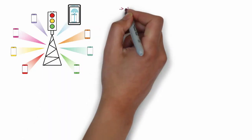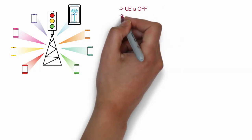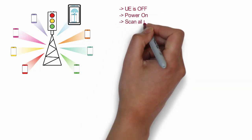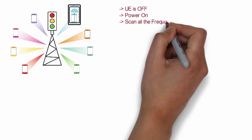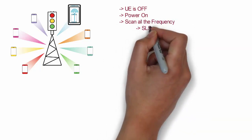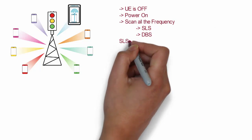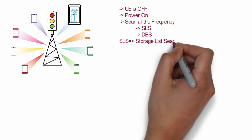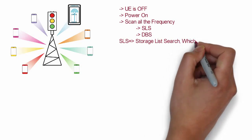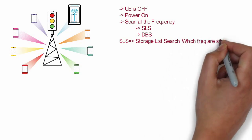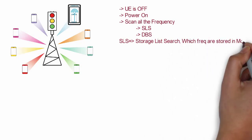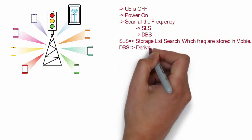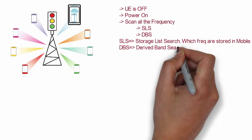Suppose the UE is off and you have just powered on the mobile — it will scan all the frequencies. There are two types of frequency scan: SLS and DBS. SLS, Storage List Search, checks and scans those frequencies which were stored in the mobile before it was switched on. That means before the mobile switched on, the frequencies that were previously used are scanned first.